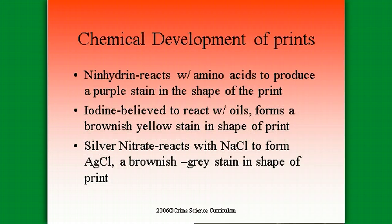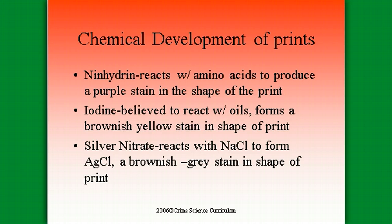Let's take a look at the chemical development of prints. Ninhydrin is what reacts with the amino acids to produce a purple stain in the shape of the print. It works really well on paper, but it doesn't necessarily stay there long term, so sometimes you have to take a picture of it. Iodine fuming reacts with the oils in your print and forms a brownish-yellow stain in the shape of the print. Silver nitrate reacts with the salts forming silver chloride, producing a brownish-gray stain in the shape of the print.